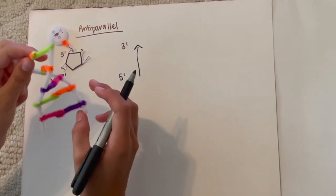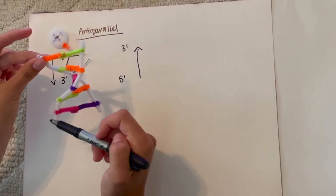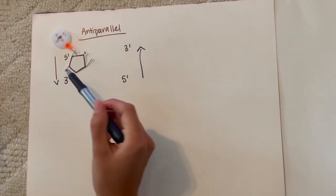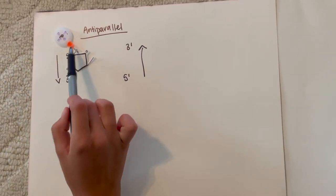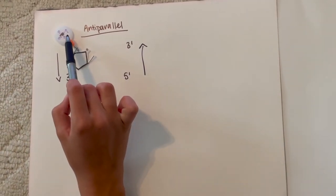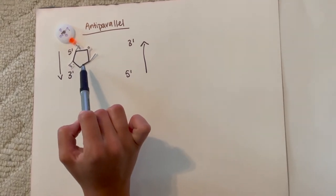So DNA has an antiparallel structure, so each of the backbones goes in opposite direction. If it's five prime to three prime, the five prime end will be a phosphate group and three prime end is always going to be the sugar.